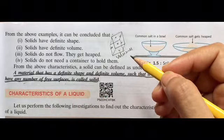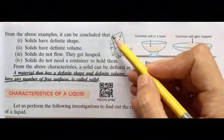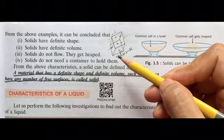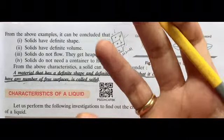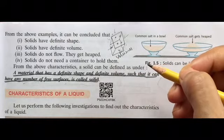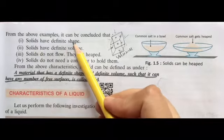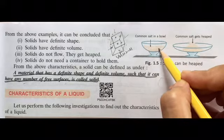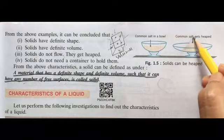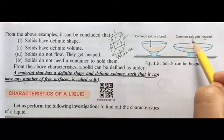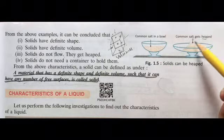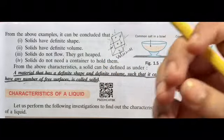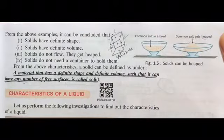If you are keeping the dice, air can touch it at any number of places: upper, lower, left, right, either side. So free surfaces which can be touched by air. In the case of solids, there can be an infinite number of free surfaces. Solids have definite shape, solids have definite volume. Solids do not flow; they can be heaped. Solids do not need a container to hold. You can keep a solid anywhere and it will stay there. You don't need a special container to contain it.